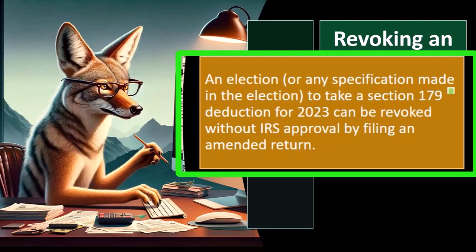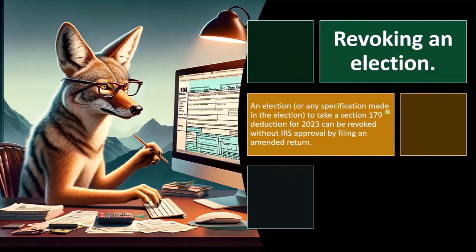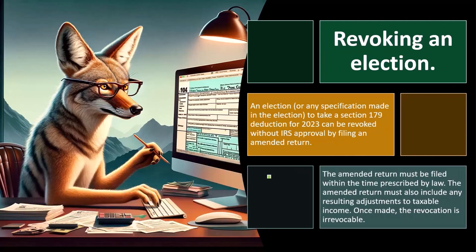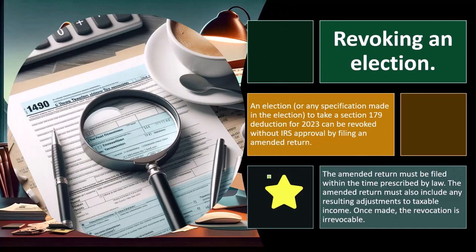If there's a problem with it, you might be able to amend the return, but you would have to do that within the timeframe allowed. The amended return must be filed within the time prescribed by law and must also include any resulting adjustments to taxable income. Once made, the revocation is irrevocable.